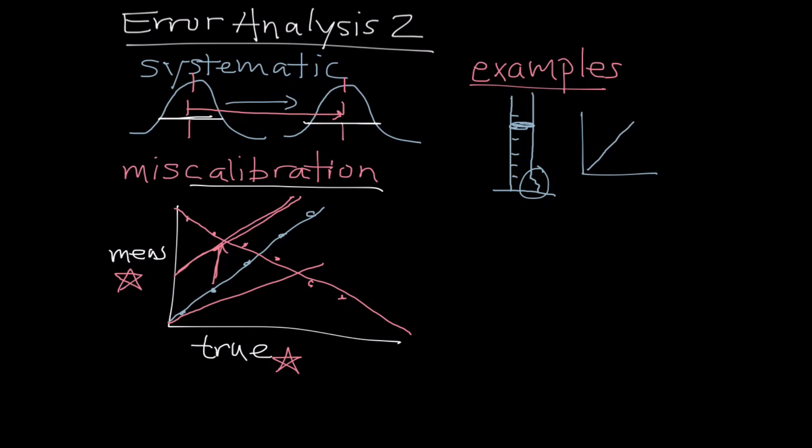So, if we imagine here's the true calibration curve, all of our measured volumes are going to end up lower than the true volumes. So, our calibration curve is going to be shifted, and this is a classic example of miscalibration. So, this is what we might call an imperfection in the glassware. And it's a very common source of systematic errors in chemical reactions and things of that nature.